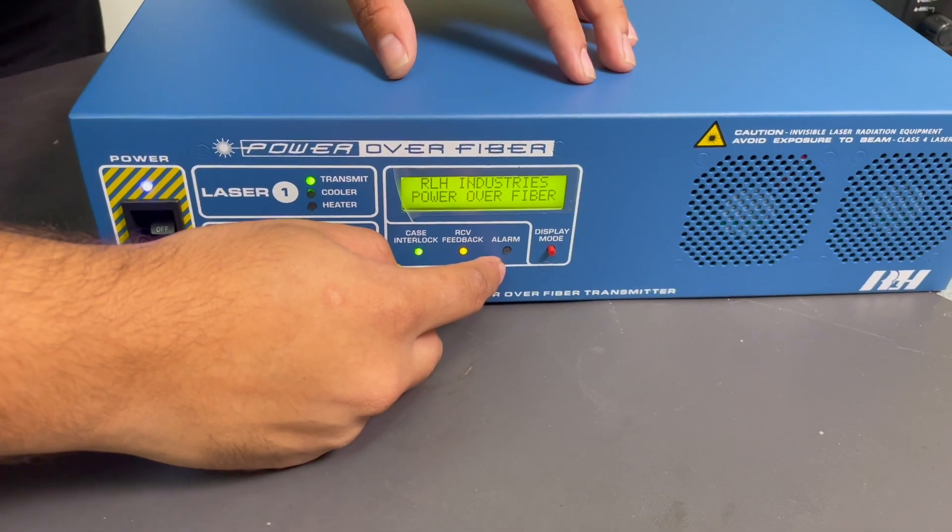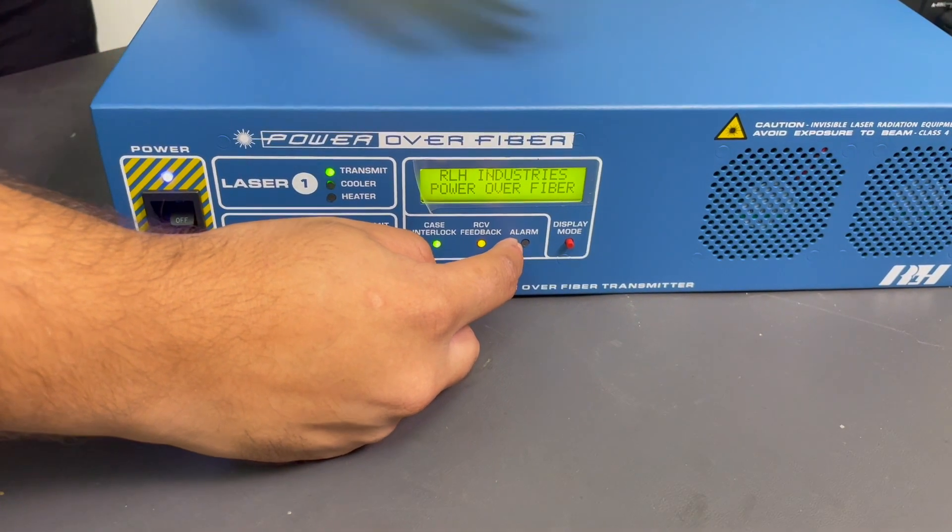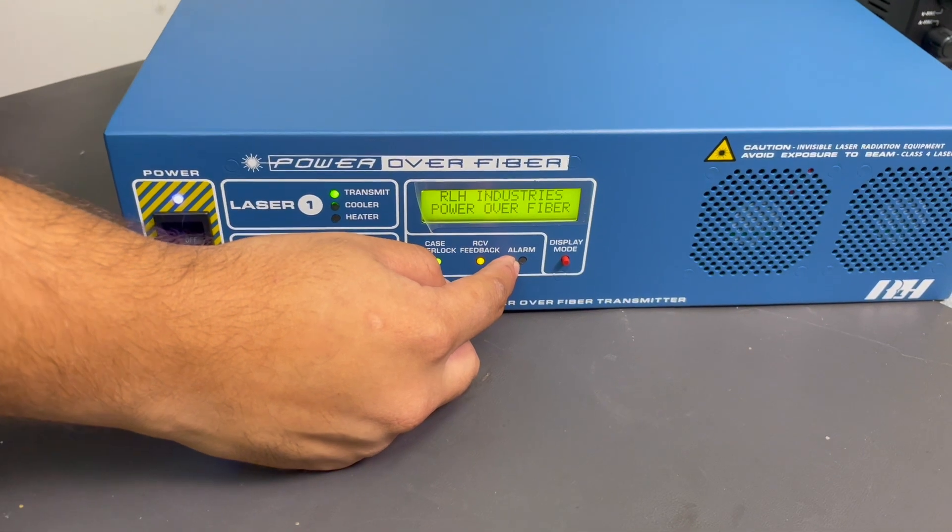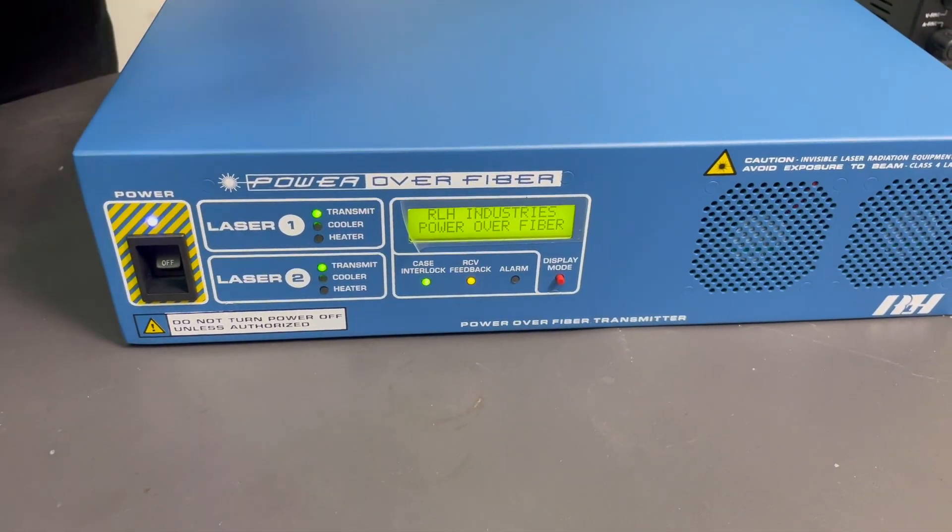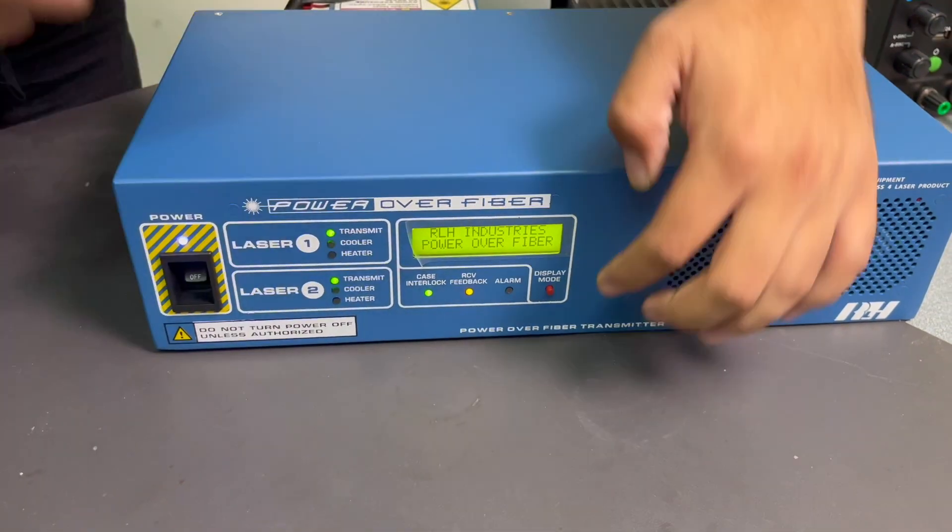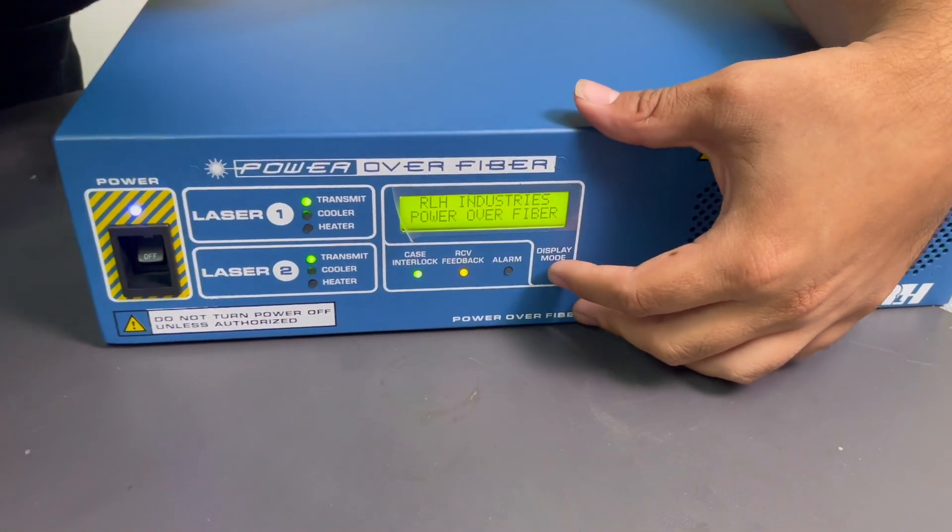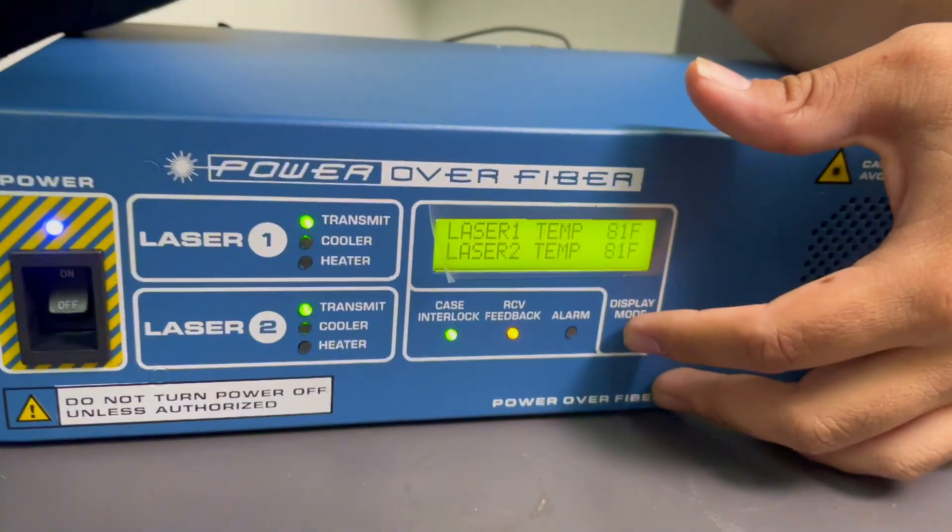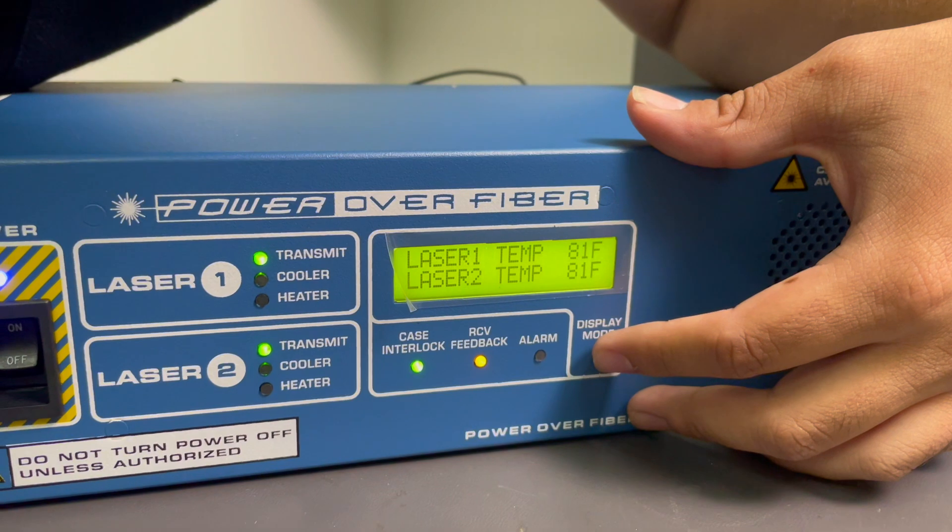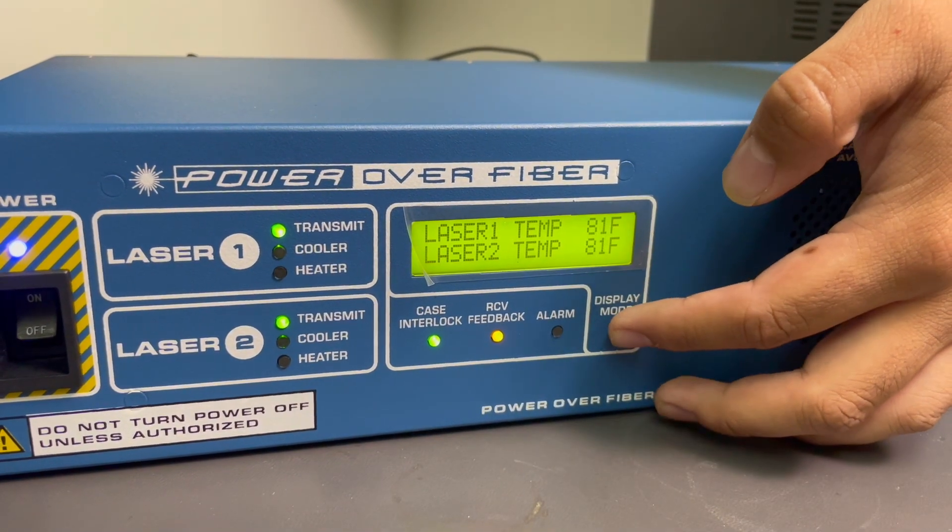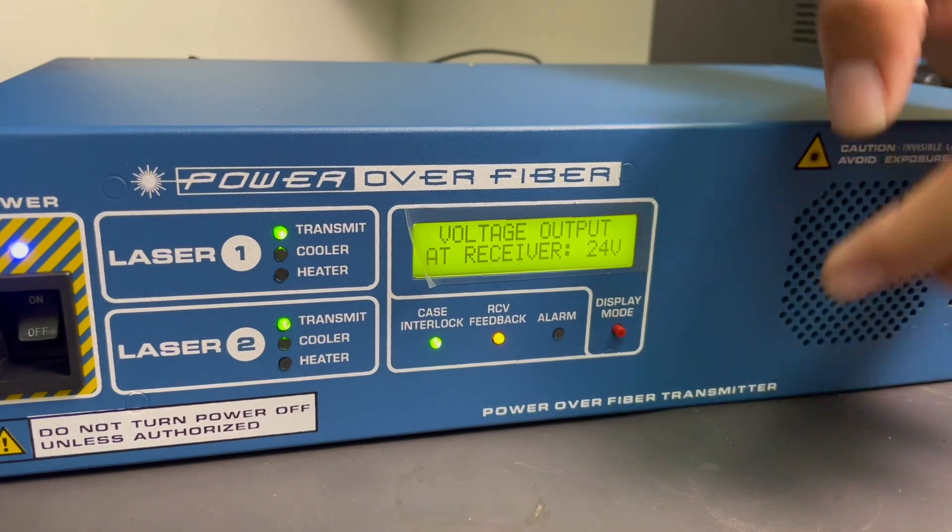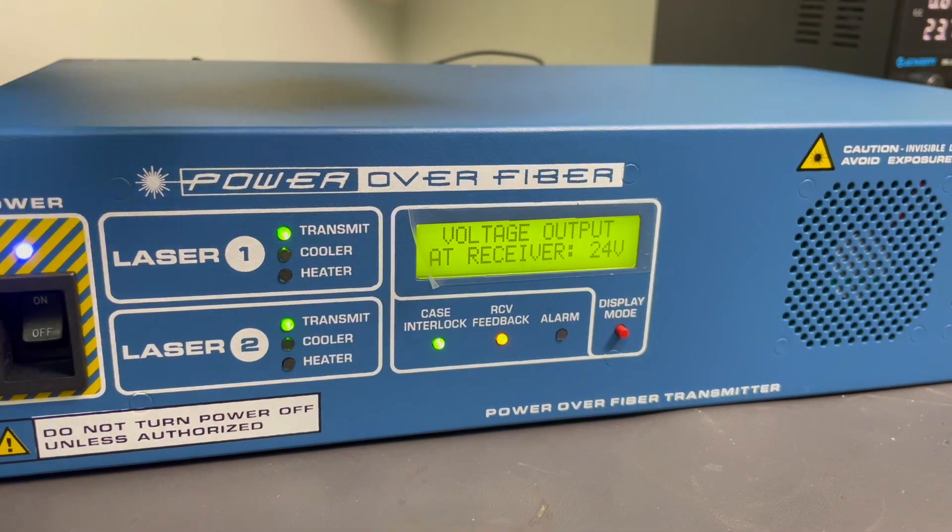And another important thing is alarm. So alarm depends upon your receiver side if there's any fault on the other side or not. And using this toggle switch, you can have different displays where it's displaying the temperature of the lasers, one and two, 81 Fahrenheit, 81 Fahrenheit, and another thing you can also see what is the output voltage on your receiver side.